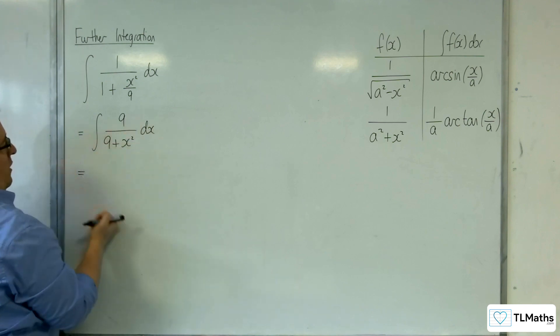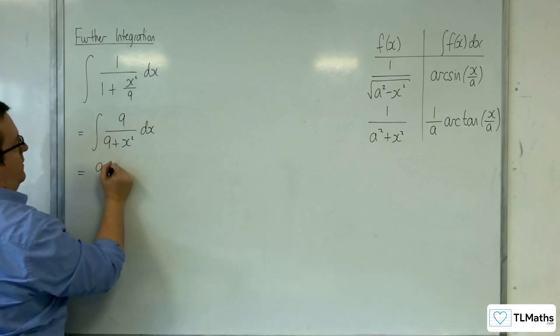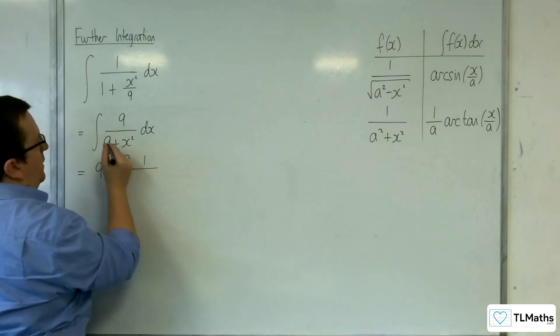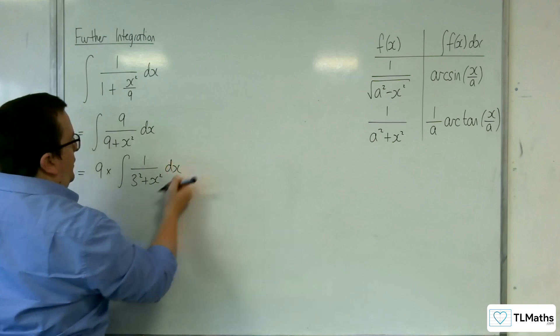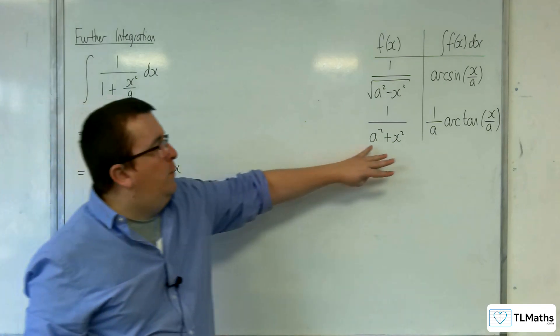If I pull the 9 out of the integral, we've got 9 times the integral of 1 over 9, which is 3 squared. You can see that it's in this format where a is 3.